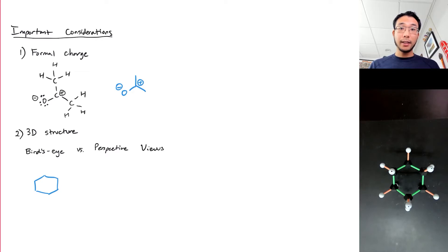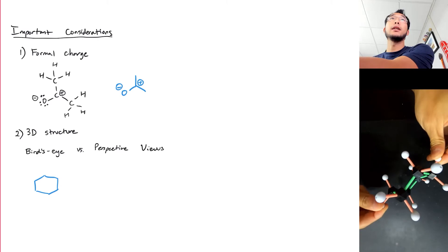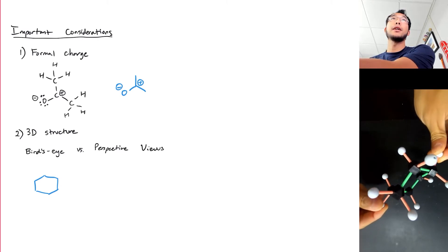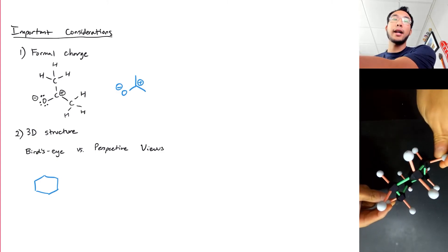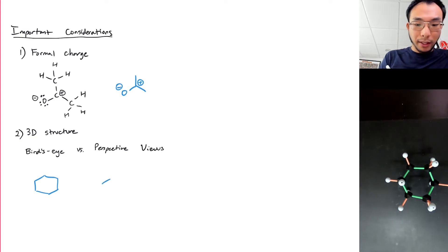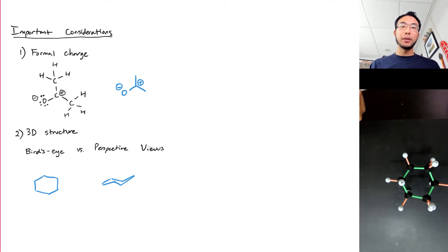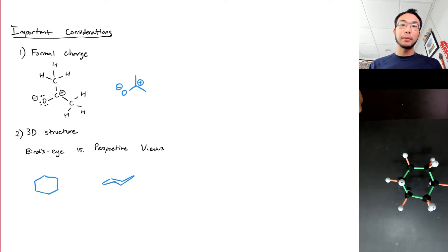This molecule however is not flat. If you rotate it around a little you'll see there's a wavy nature to it — some of the carbons seem to go up and some seem to go down. When we're trying to highlight that aspect of the molecule we use what are called perspective views. It's important to understand that the bird's eye view drawing and the perspective view drawing are referring to the same molecule — we just use them in different contexts depending on what our goals are.